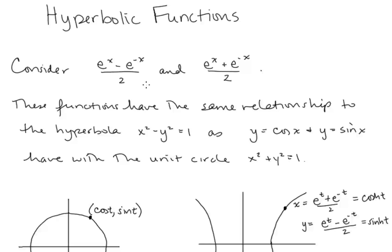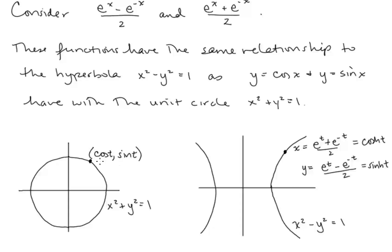We start by considering two functions — these combinations of the exponential function have the same relationship to the hyperbola x² − y² = 1 as y = cos(x) and y = sin(x) have with the unit circle. Any point on the unit circle can be represented as x = cos(t), y = sin(t). Similarly, any point on the hyperbola x² − y² = 1 can be represented as x = (eᵗ + e⁻ᵗ)/2 and y = (eᵗ − e⁻ᵗ)/2. We call the first function hyperbolic cosine of t, and the second hyperbolic sine of t.